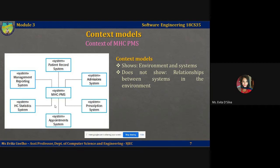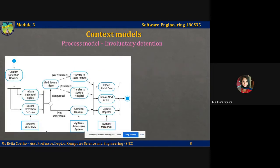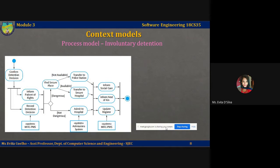Simple context models are used along with other models such as business process models, which describe more human and automated processes in which particular software systems are used. Another diagram here shows the process model of involuntary detention — a model of an important system process that shows the processes in which MHCPMS is used. Sometimes patients suffering from mental health problems may be a danger to others or themselves.